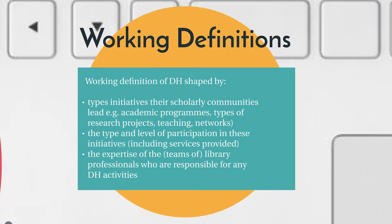One of the first things we asked was about the definitions institutions employed — if they employed a definition of digital humanities within their institutions. We found that most of the time participants didn't have a formal definition for this work and didn't work within a specific framework around digital humanities, but they had working definitions. These were often shaped by the types of initiatives their scholarly communities led, the types and level of participation, and the expertise of the staff members involved.